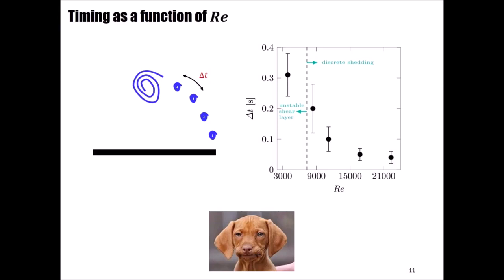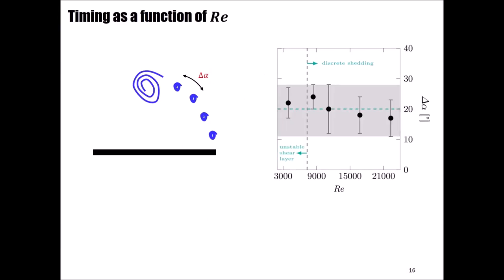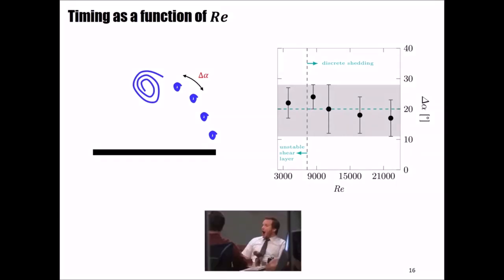But if we now consider the timing in degrees, we observe a release of secondary vortices approximately every 20 degrees. This is very interesting, because it shows that the Reynolds number is responsible for the occurrence of secondary vortices, as we've seen up to now, but it doesn't affect at all the spacing at which vortices are shed. And something more, it proves that the plate angular position is a valid scaling parameter to describe the frequency at which secondary vortices separate.